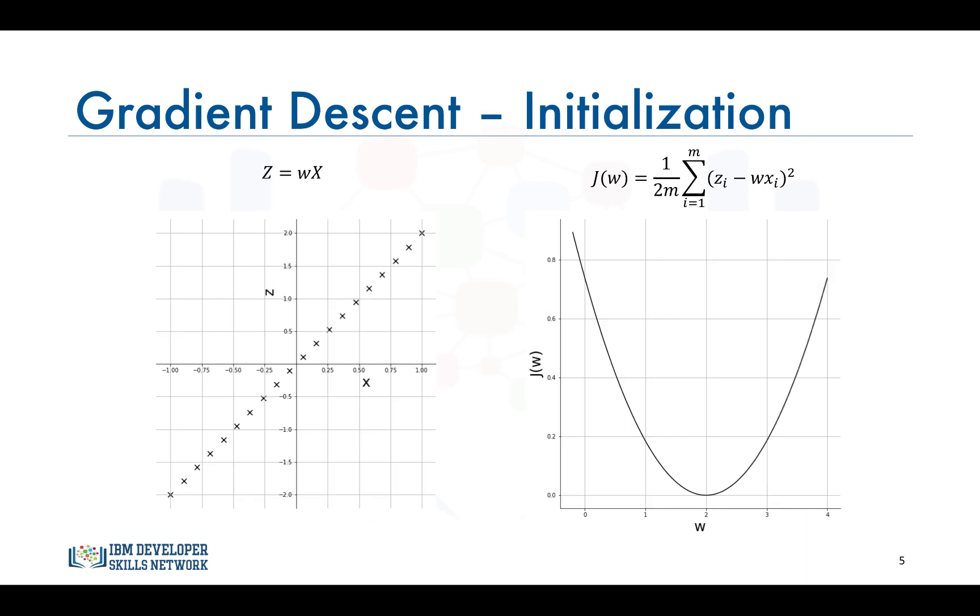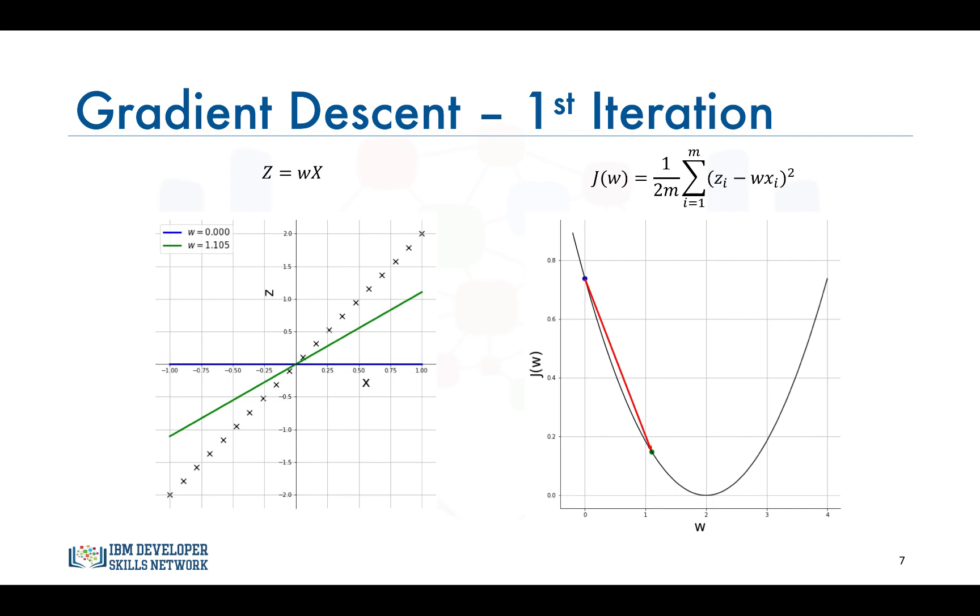Now let's see how each iteration with a learning rate of 0.4 affects the way the resulting line fits the data on the left. We initialize w to 0 which means z equals 0. It's a horizontal line and therefore the cost is high and the line as you can see is a bad fit. After the first iteration w moves closer to 2, and because the slope is very steep at w equals 0, the new value of w results in a big drop in the loss function. The resulting line fits better than the initial one but there is still room for improvement.